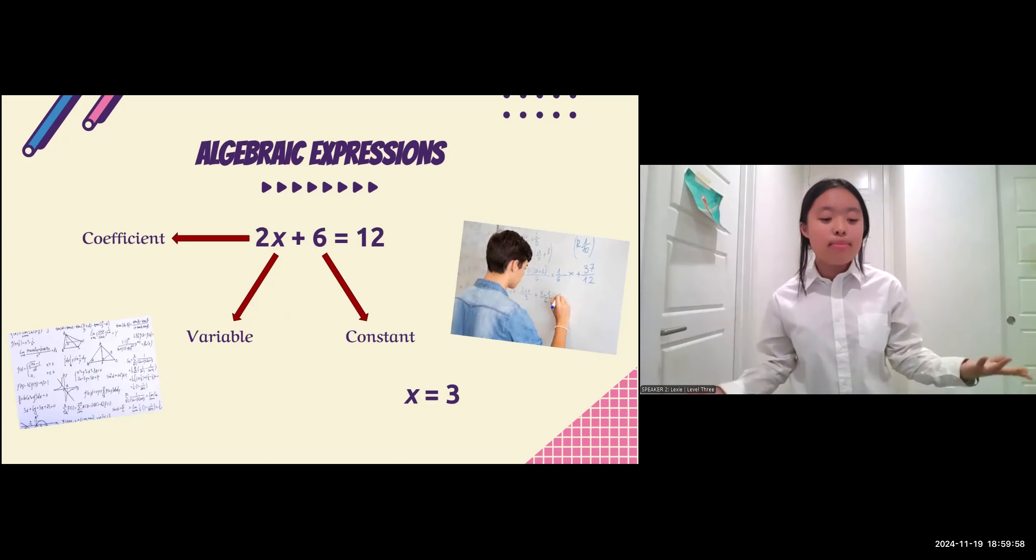When it comes time to solve the equation, the constant is the number you would add or subtract from the variable to get the solution. In the equations I'm going to give you later on to practice today, I will give you the answer for the variable, but you'll need to figure out the answer to the equation using the coefficient and the constant.